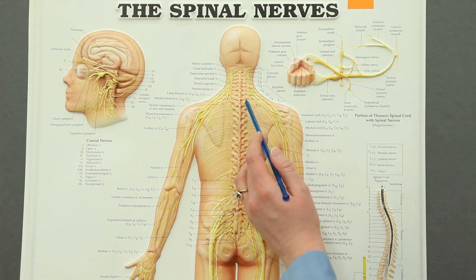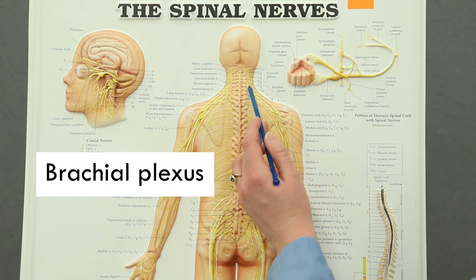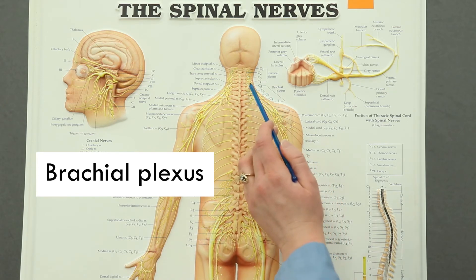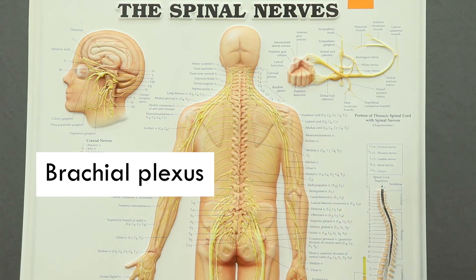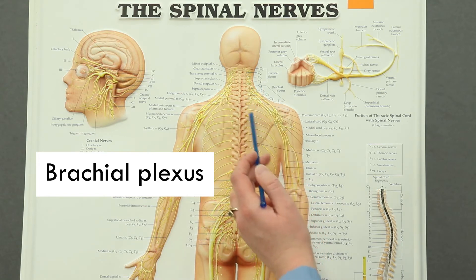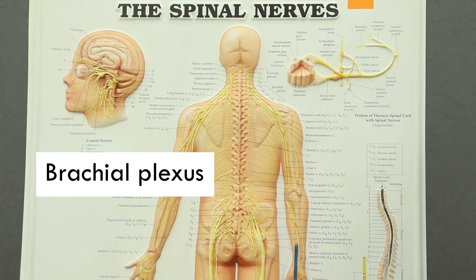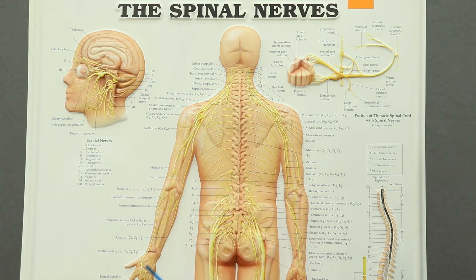Right below the cervical plexus, we have the brachial plexus, which comes from levels C5 to C8 and T1 of the spinal cord. The brachial plexus will serve the upper extremity. We have several important nerves that come off of the brachial plexus.